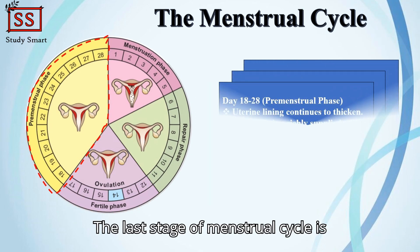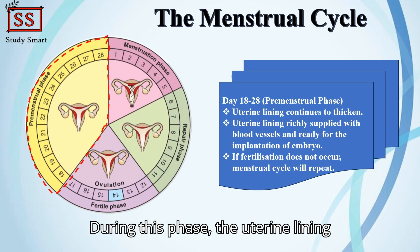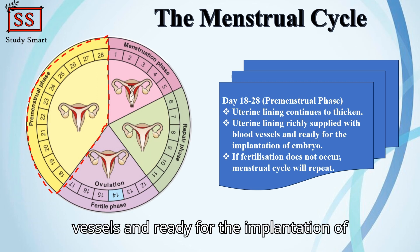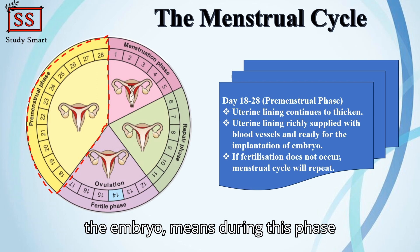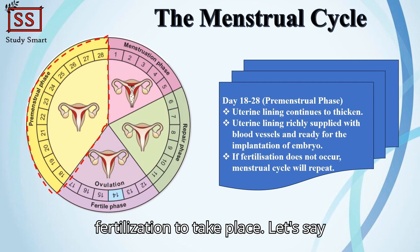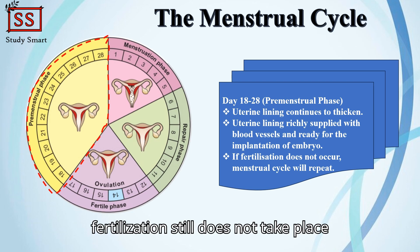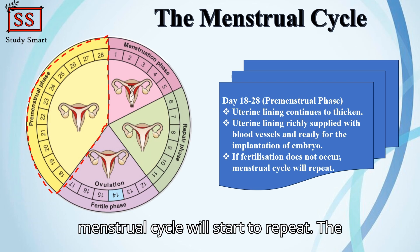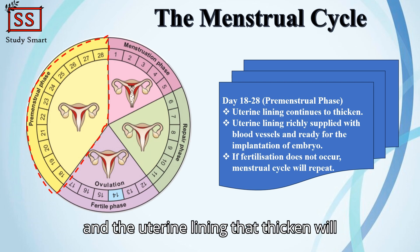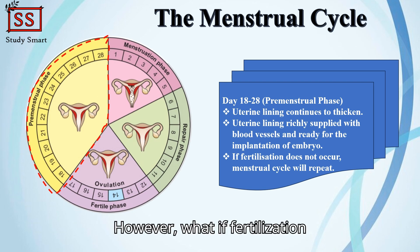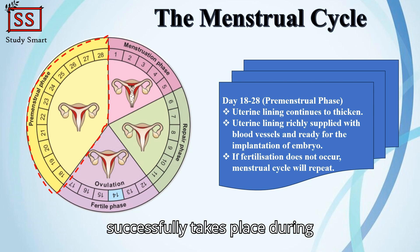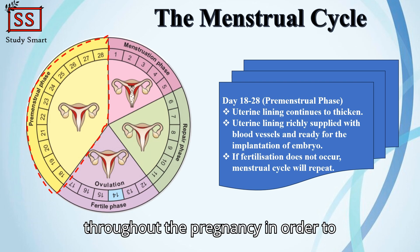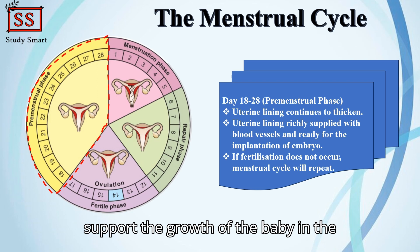The last stage of the menstrual cycle is known as the premenstrual phase. During this phase, the uterine lining continues to thicken and is richly supplied with blood vessels, ready for the implantation of an embryo. The body is still giving a chance for fertilization to take place. If fertilization still does not occur, the menstrual cycle will start to repeat — the menstruation phase repeats and the thickened uterine lining starts to break down. However, if fertilization successfully takes place, the menstrual cycle will stop throughout the pregnancy to support the growth of the baby in the uterus.